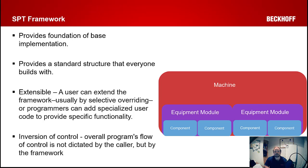A framework can provide a core set of library components at the base level — like your axes, buzzers, and buttons — but it also provides the structure of how you assemble those components together to create your overall machine code. Frameworks are extensible, so you take the framework as deployed and override parts of it to implement your specialized functionality. One thing to note is inversion of control: the overall program flow is generally no longer controlled by yourself but by the framework itself, and you are just plugging in your code to make it do what you want.